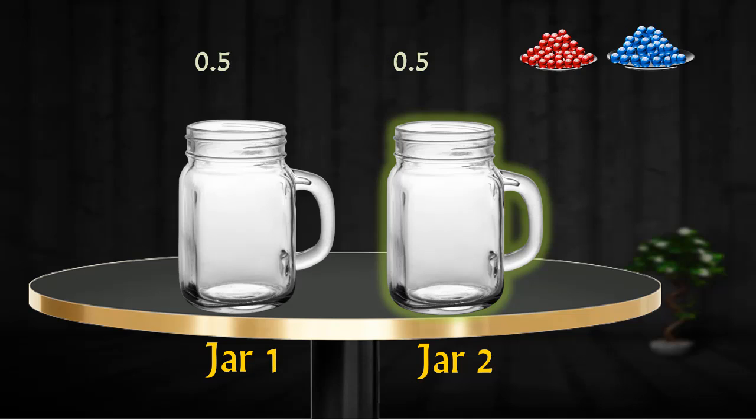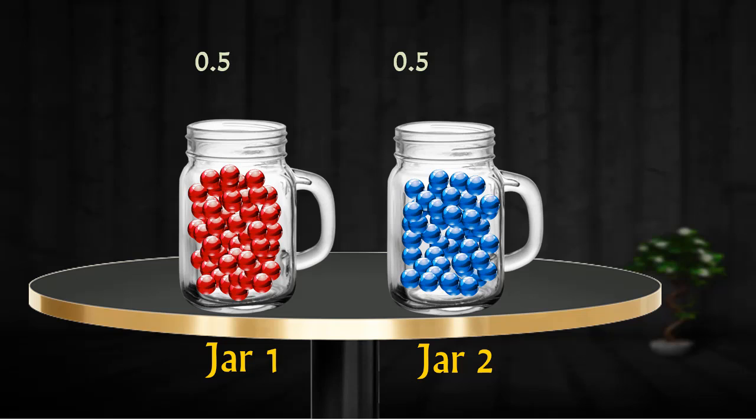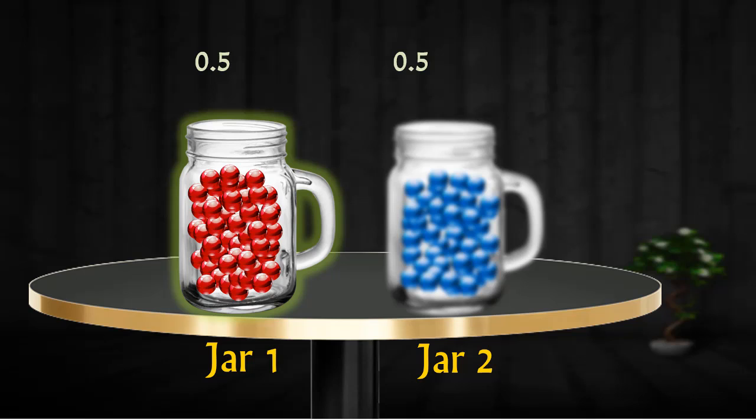We will start off with a basic approach then we will optimize our solution. Let's place 50 red marbles in jar 1 and 50 blue marbles in jar 2. Now, if you select jar 1 at random then in this case you have 100% chances of drawing a red marble which gives the probability as 1.